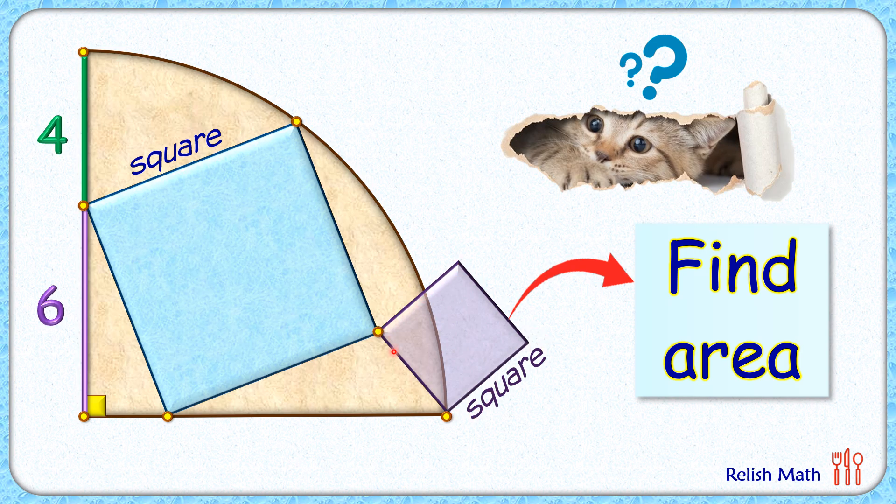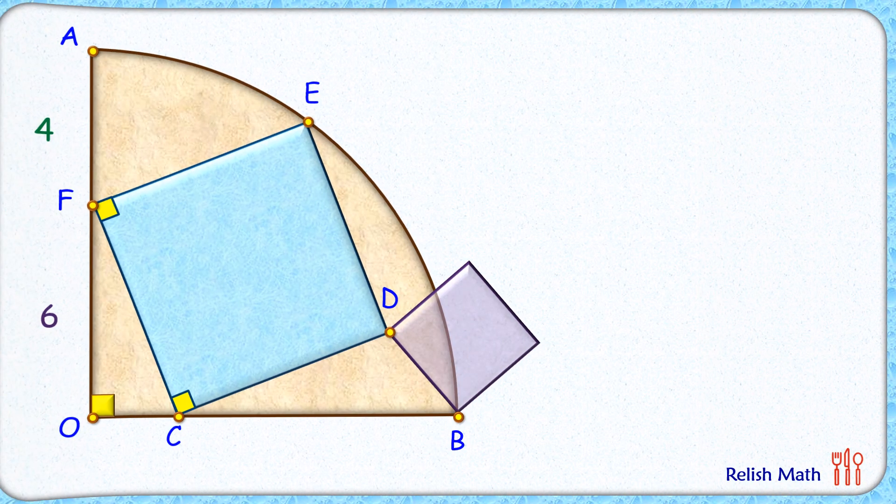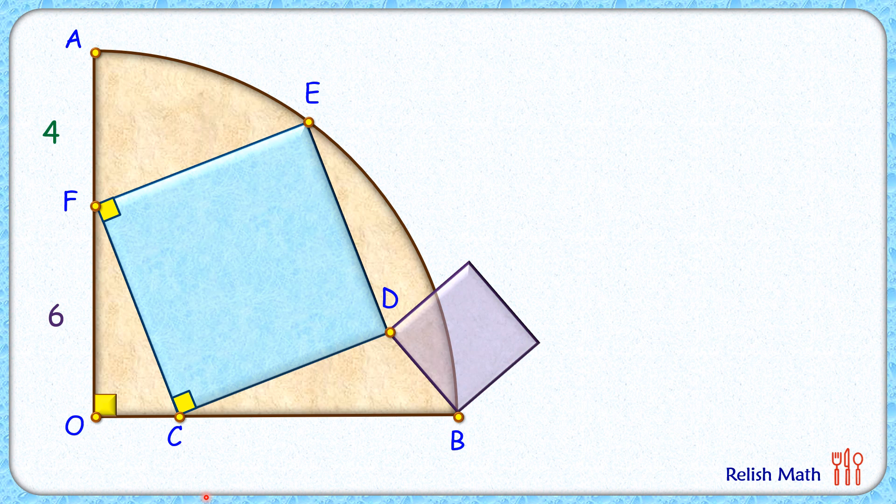Let's check this simple and elegant solution. To find the area of this purple square, we need to find the side length DB. For that, let's drop perpendicular from point D on OB. So if we can get the length DM and MB by Pythagorean theorem, we can find length DB and thus the area of square. Also, let's drop perpendicular from point E on AF.